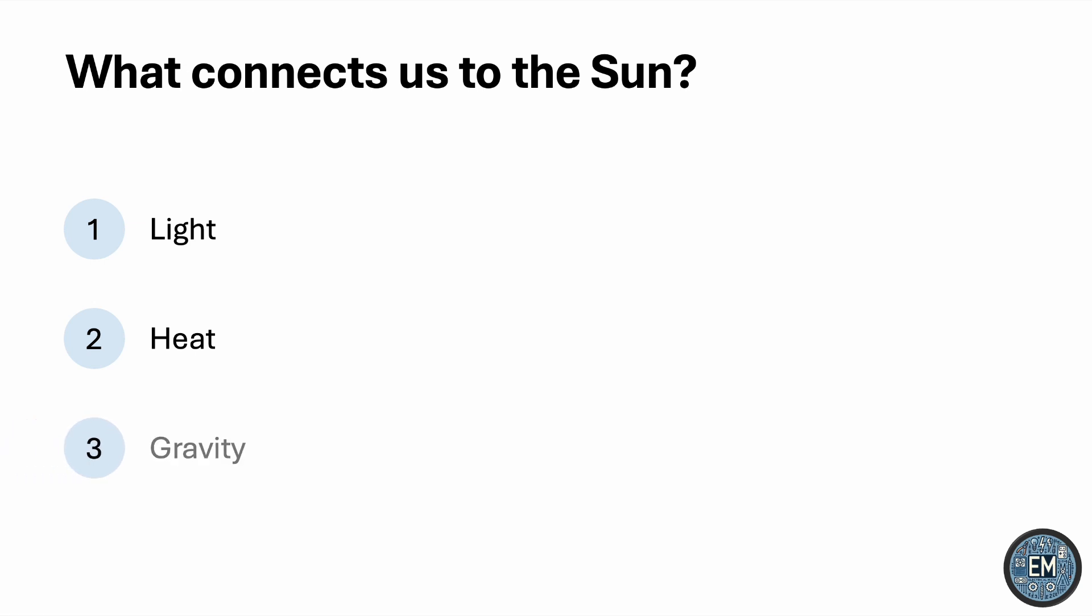In our quest to calculate the mass of the Sun, let's start with an obvious fact. Naturally, we can't go and measure the mass of the Sun, so we're going to have to deduce it from information that is available to us. The first question that should come to mind is: what connects us to the Sun? Well, there's its light, its heat, and gravity. Of these three, gravity is the most relevant within the context of the discussion.